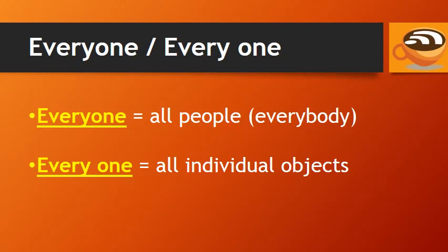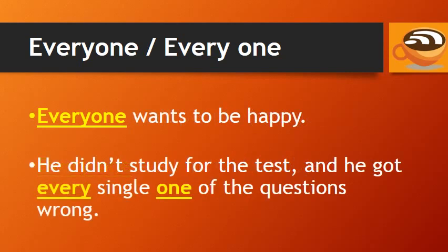Everyone and every one. 'Everyone' refers to all people — it is the same as everybody. 'Every one' refers to all individual objects. For example: 'Everyone wants to be happy' means all people want to be happy. 'He didn't study for the test, and he got every single one of the questions wrong' — questions are objects, not people. We often say 'every single one' for emphasis.